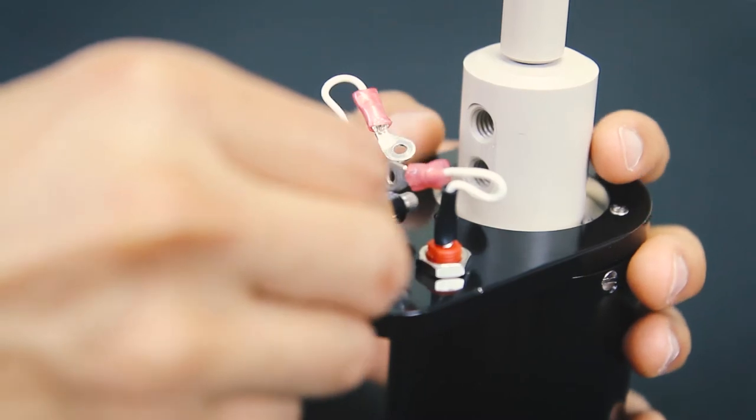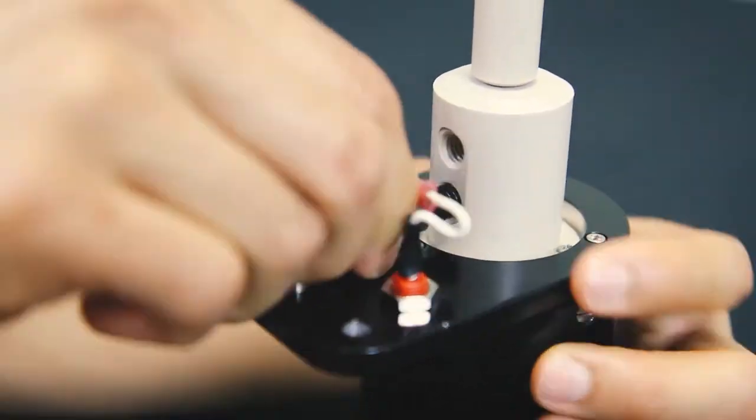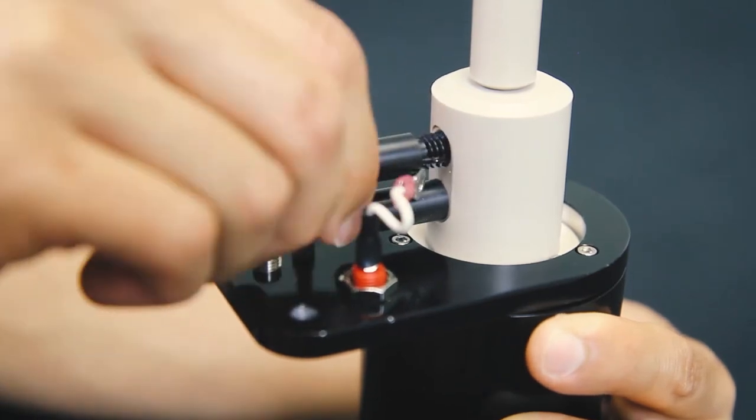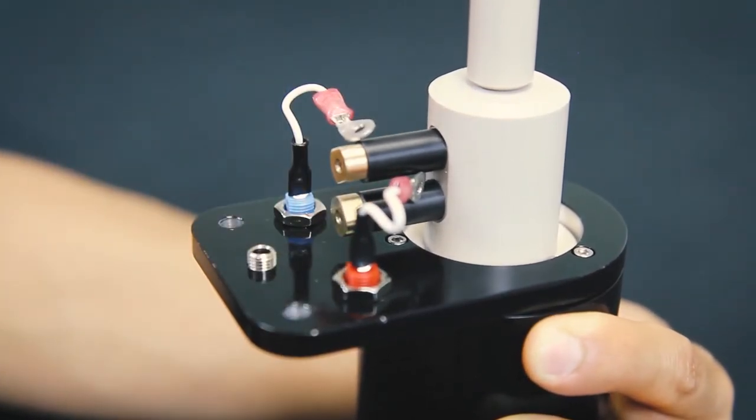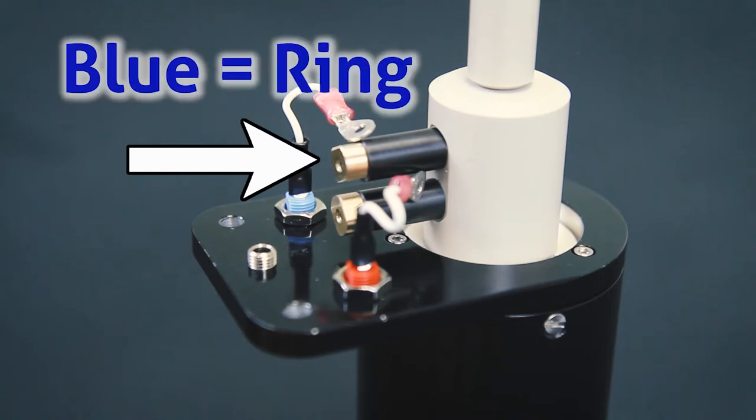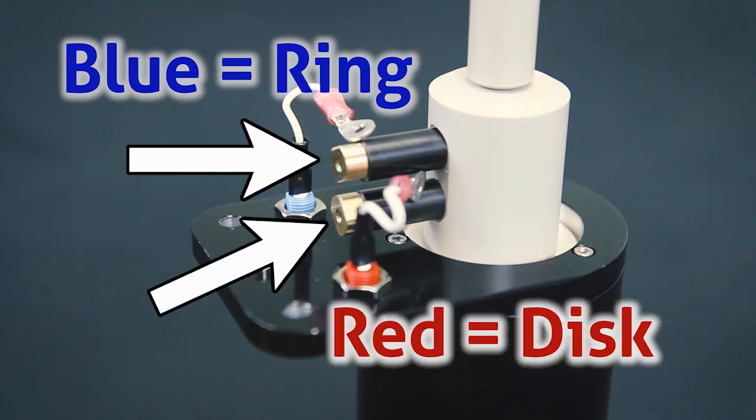Next, install the brushes using your fingers. Note that the brush that is closest to the shaft connects to the blue contact wire, the ring electrode, and the brush closest to the motor housing connects to the red contact wire, the disc electrode.